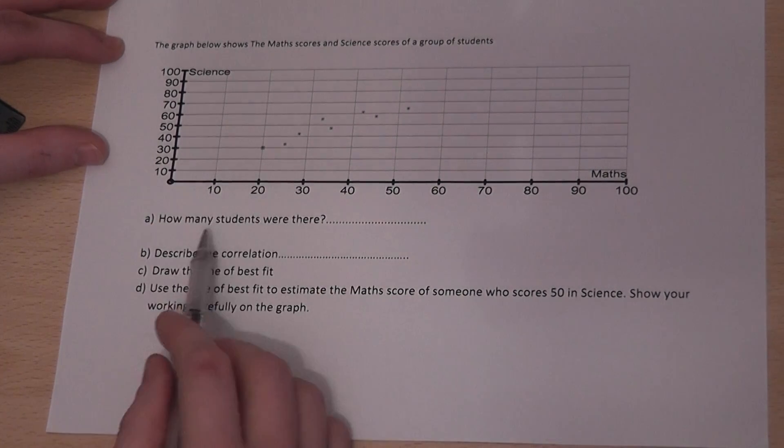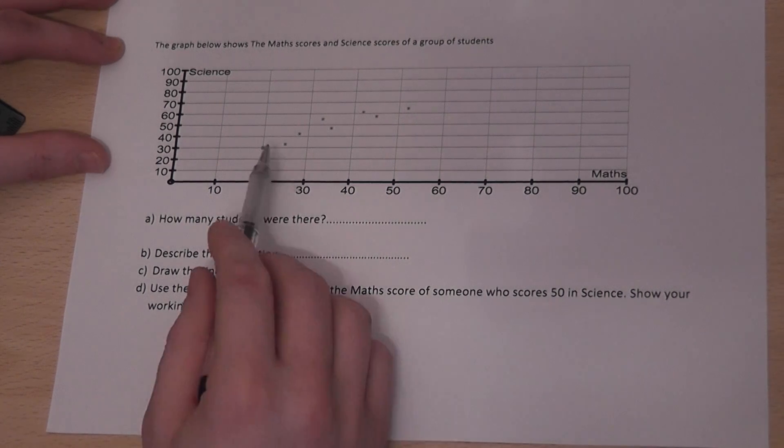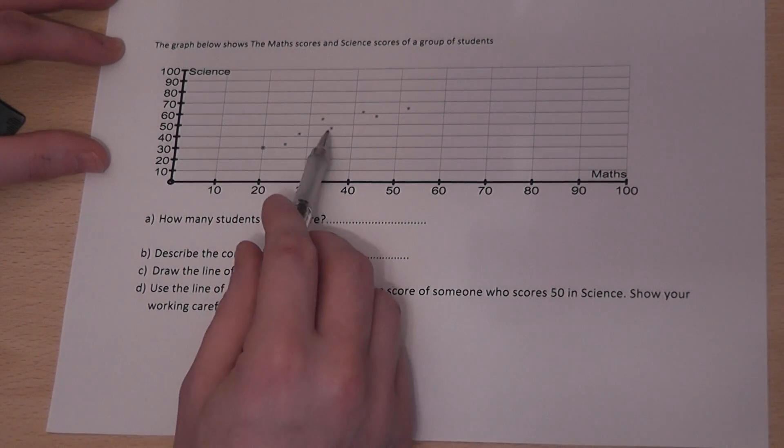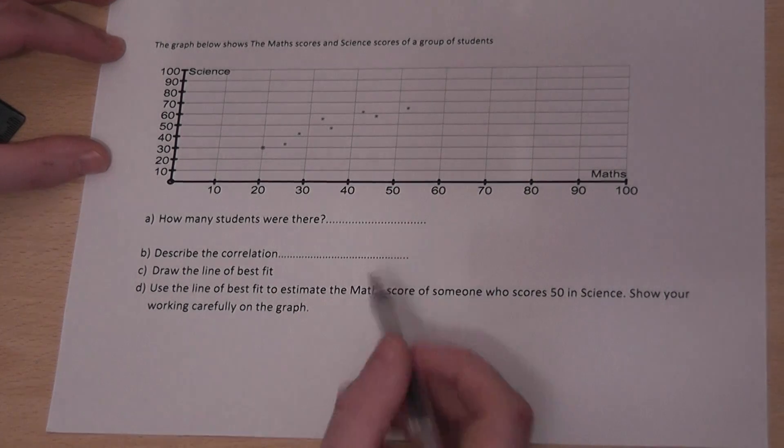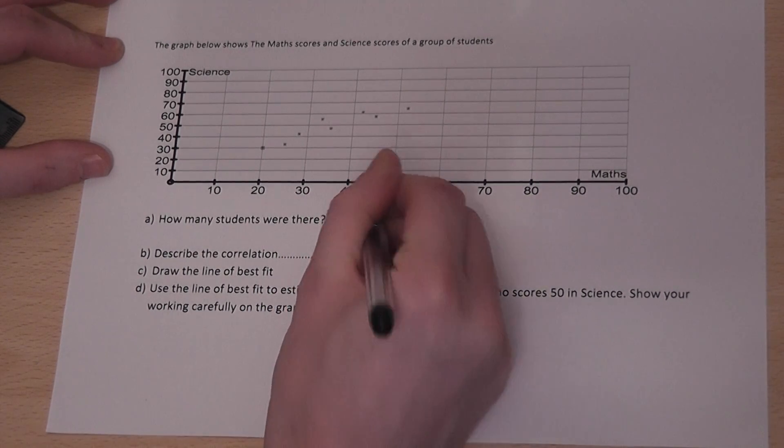So when the question asks how many students were there, you count the dots. So 1, 2, 3, 4, 5, 6, 7, 8. There are 8 dots, so there are 8 students.